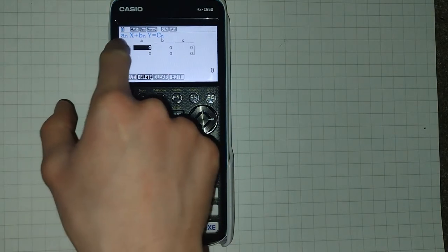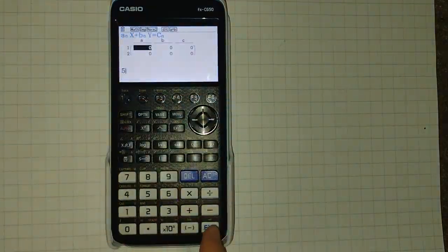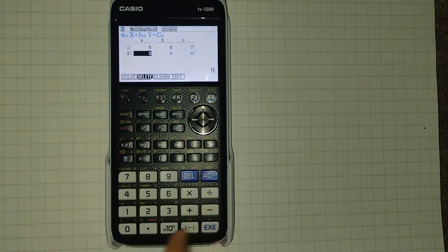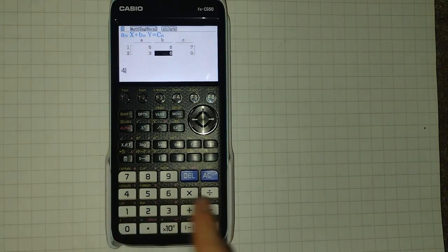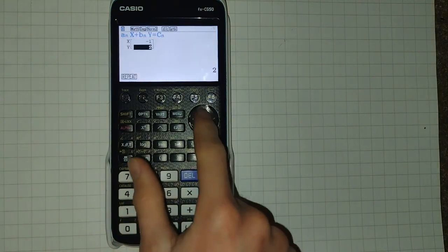So as you can see, it's in this form up here. For our first, we'll have 5x plus 6y equals 7. And our bottom one here, we'll have 3x plus 4y equals 5. We click solve, and we've got our two solutions.